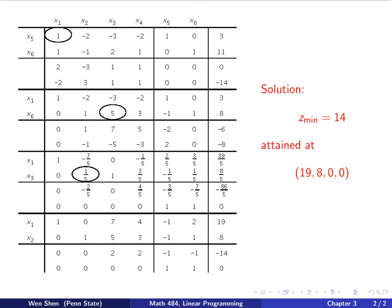So let's write this out. So the solution is z minimum is 14, because it's the negative of that, and it's obtained at this basic solution: x1 is 19, x2 is 8, x3, x4 are 0.